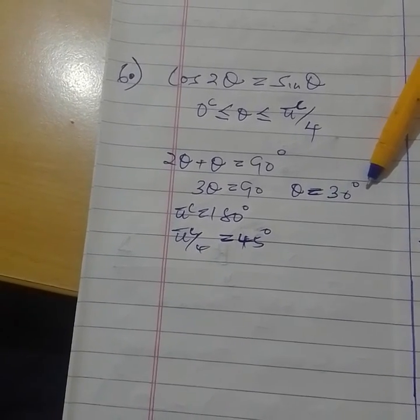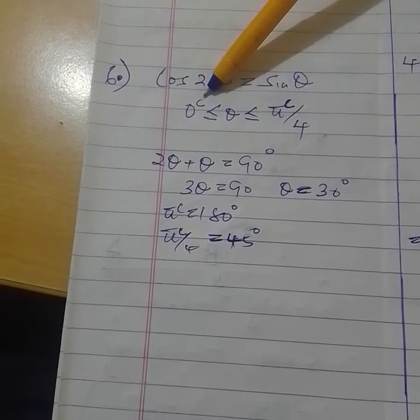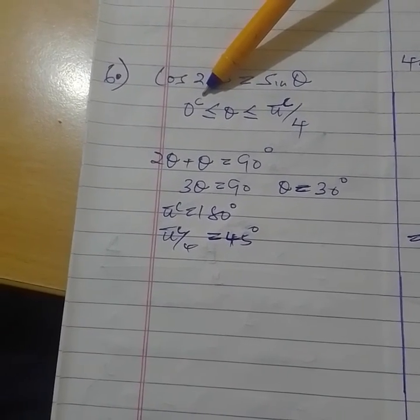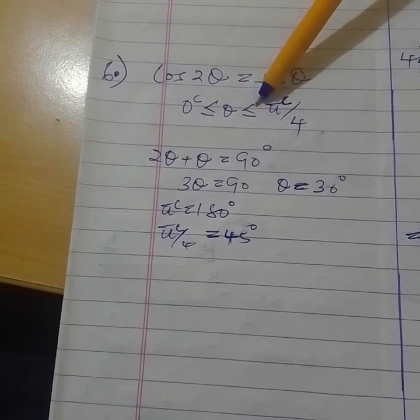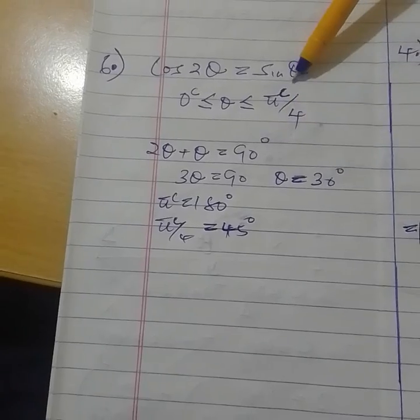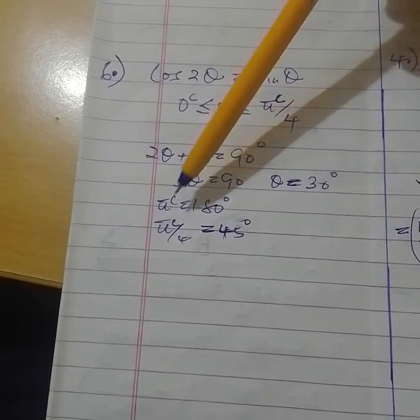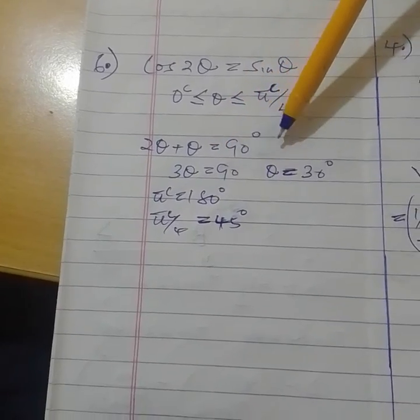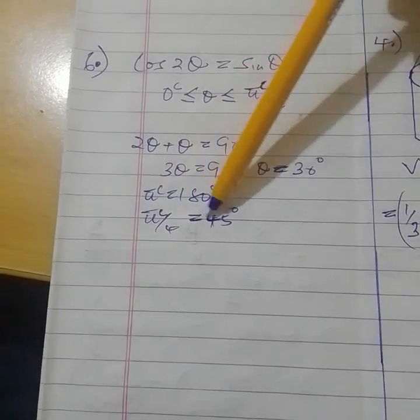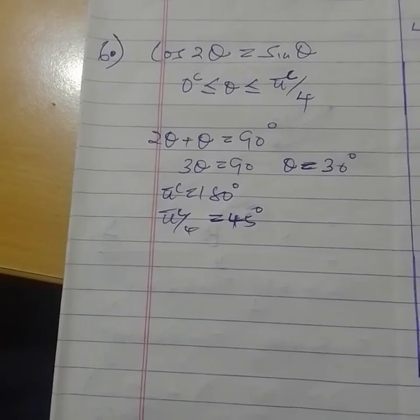Now, the question gives you a range: 0 radians should be less than or equal to θ, less than or equal to π/4 radians. You have to know that π/4 radians is how many degrees. Since π radians is 180 degrees, π/4 radians is 45 degrees.